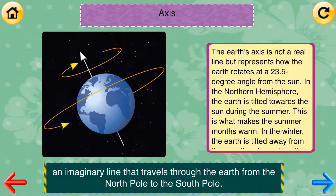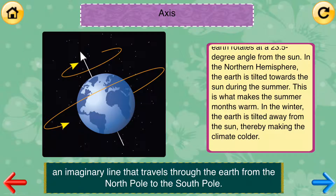Axis: An imaginary line that travels through the Earth from the North Pole to the South Pole. The Earth's axis is not a real line but represents how the Earth rotates at a 23.5 degree angle from the Sun. In the northern hemisphere, the Earth is tilted towards the Sun during the summer, which is what makes the summer months warm. In the winter, the Earth is tilted away from the Sun, thereby making the climate colder.